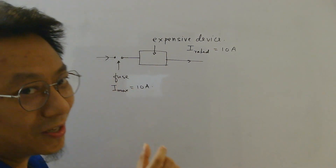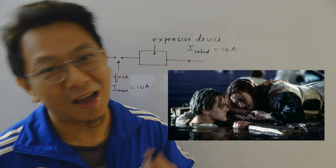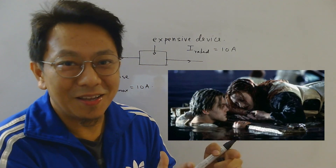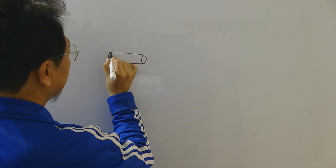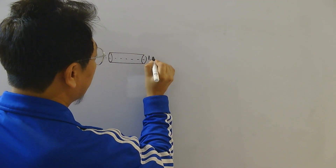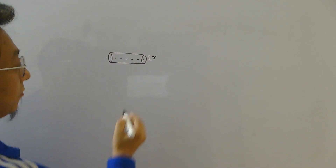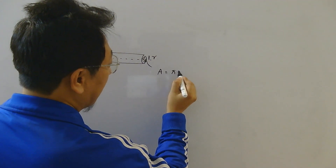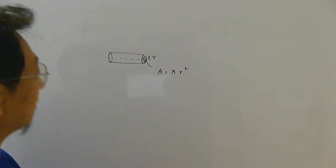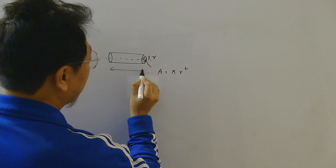So basically the fuse wire is like a side hero which dies to keep the main hero alive. Now, to derive the relation between the radius of the fuse wire and the maximum current it can take — let's say you have a cylindrical fuse wire. The radius of this fuse wire is R, and therefore the area of cross section will be π R², with a circular cross section. The length of this wire is L.